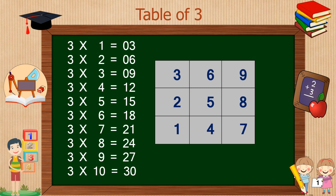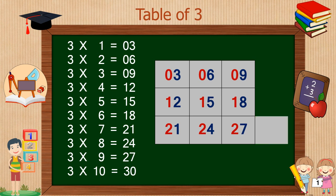Each row follows a different pattern. In the first row, write down 0, 0, 0. In the second row, write down 1, 1, 1. In the third row, write down 2, 2, 2. Finally, add 3 and 0. Our table of 3 is ready — this is the simplest way to write down the table of 3.